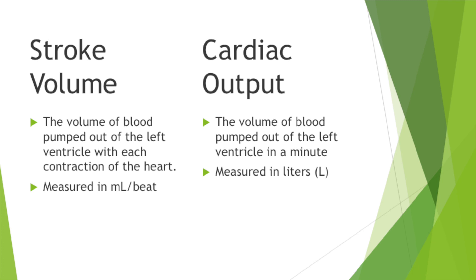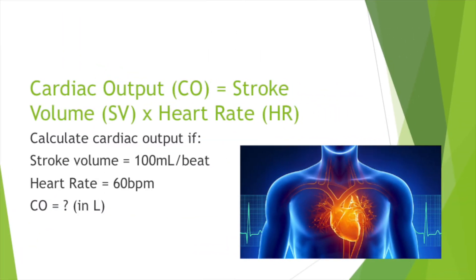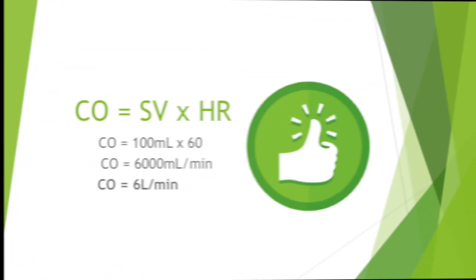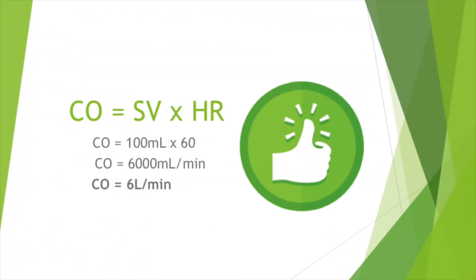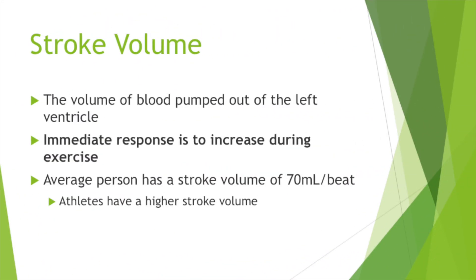Stroke volume is the volume of blood pumped out of the left ventricle with each contraction of the heart. Cardiac output is very similar and is defined as the volume of blood pumped out of the left ventricle in a minute. Cardiac output can be calculated by multiplying stroke volume by heart rate. For example, if an athlete's stroke volume is 100 milliliters per beat and heart rate is 60 beats per minute, their cardiac output would be 6 liters. Note that cardiac output is measured in liters.